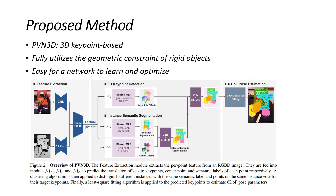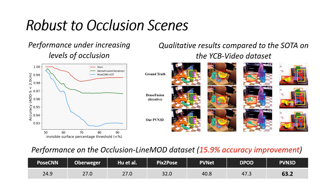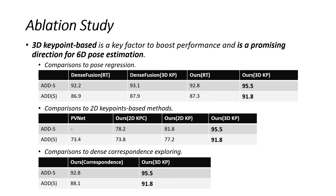In this work, we propose a 3D keypoint-based method, PVN3D. It allows us to fully utilize the geometry constraint of rigid objects, and it's easy for a network to optimize. PVN3D outperforms state-of-the-art by a large margin, and it's robust to occlusion naturally. Ablation studies show that 3D keypoint-based outperforms other formulations and is a promising direction.